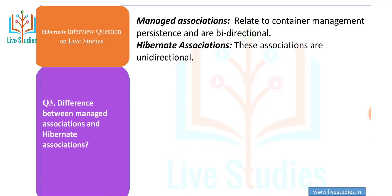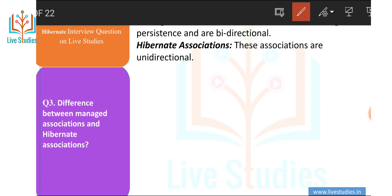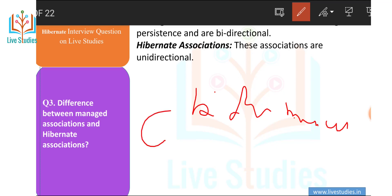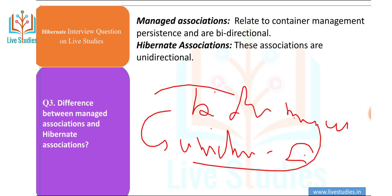Next question: what is the difference between managed association and Hibernate association? Managed association relates to container-managed persistence and is bidirectional. Hibernate association is unidirectional — so in managed association the direction is bidirectional, but in Hibernate it is unidirectional.